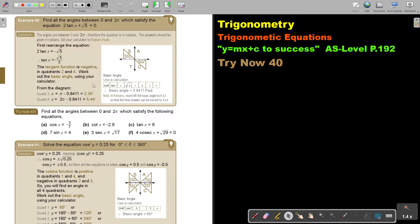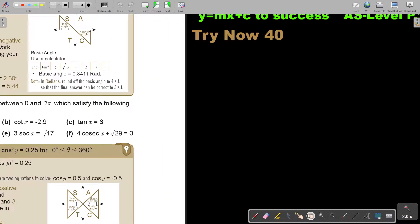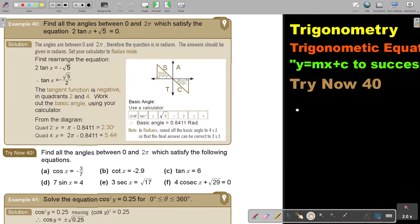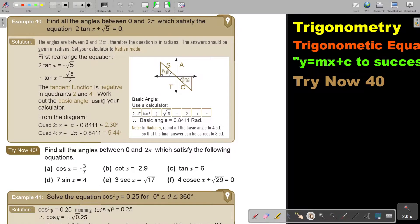Let's look at another example. Find all the angles between 0 and 2π which satisfy the equation 2 tan x plus square root 5 equals 0.